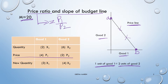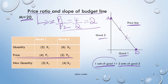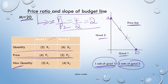According to the given information, the price of P1 is 4 rupees and the price of good two is 2 rupees. This indicates the slope of the budget line — that means to have one unit of good one, the consumer needs to sacrifice two units of good two. You can see in this table: previously he had two units of good one and six units of good two; now to have one more unit of good one, he has sacrificed two units of good two.